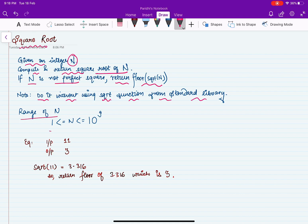The range of n is from 1 to 10 to the power 9. Let's say the input is 11, so the output is 3. How? Because the square root of 11 is 3.316, therefore we will take the floor of it, so we will get 3 as the answer.